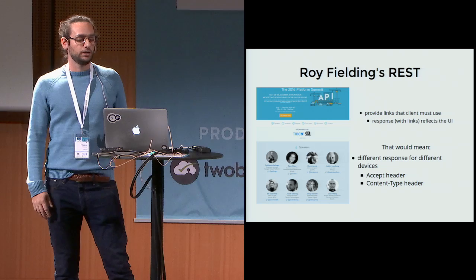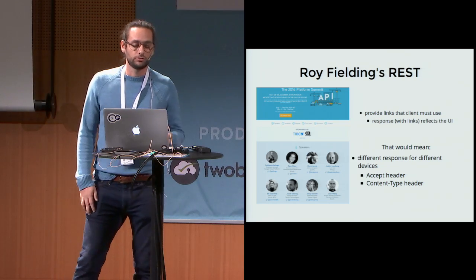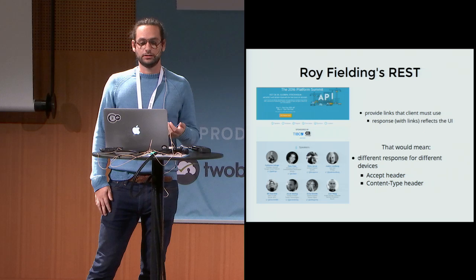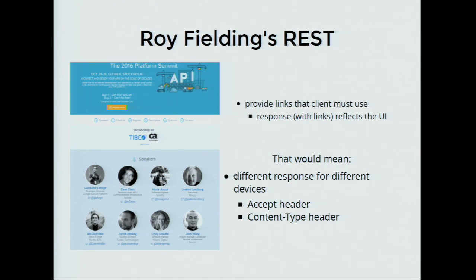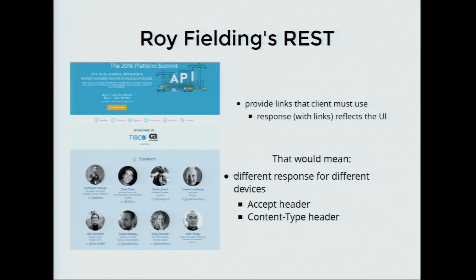In another example, also on Nordic APIs: if the client renders speakers and wants to navigate to Joakim, the server must provide the link for that. And of course we have different clients, different devices. From the server side, we need to render different content that's easy to parse or suited for desktop applications. It's up to the client to ask and negotiate for the content.